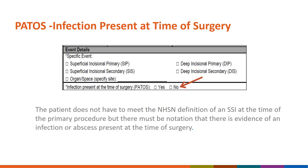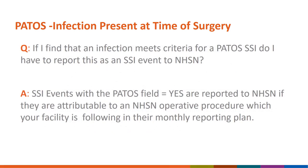The patient does not have to meet the NHSN definition of an SSI at the time of the primary procedure, but there must be evidence of an infection or abscess present at the time of surgery. One frequently asked question is: if I find an infection that meets criteria for a PATOS SSI, do I have to report it as an SSI event? The answer is yes. SSI events with the PATOS field marked as yes are reported if they are attributable to an operative procedure that the facility is following in its reporting plan.